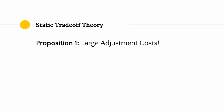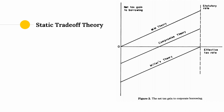Another big part of static trade-off theory is debt and taxes. Starting with Modigliani-Miller: they basically said that interest tax shields were so valuable that a firm could basically borrow as much as possible, because you'd be shielding yourself to the point where you'd be maximizing your firm value.